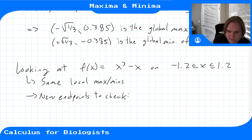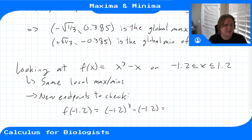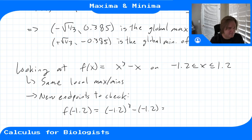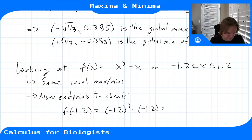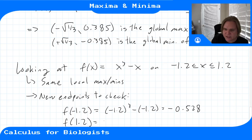f(-1.2) = (-1.2)³ - (-1.2) ≈ -0.528. By symmetry, f(1.2) should be the mirror image.